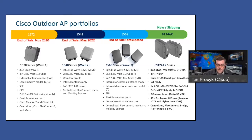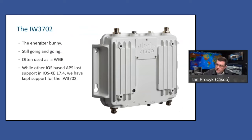That really leaves us one option from an outdoor 802.11ax AP right now. On the far right-hand side, you see the 9124 — kind of our all-singing, all-dancing unit. Consider this as the replacement for the 1572. If you're a 1572 shop, this is the AP you want to move forward with. The IW3702 is kind of our Energizer Bunny — it's been around a while and just keeps going. We still have plans to support it well into the future with IOS XE, whereas some of our older IOS-based APs have dropped off.